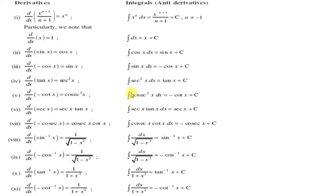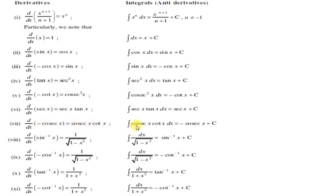Integration of cosec²x होगा -cot x + c. sec x का differentiation होता है sec x · tan x, तो reverse process — ∫sec x tan x dx = sec x + c. cosec x का differentiation -cosec x · cot x होता है, तो ∫cosec x cot x dx = -cosec x + c.